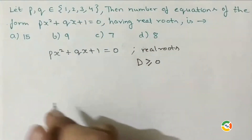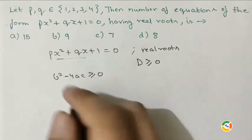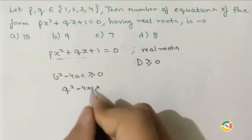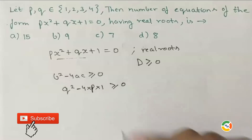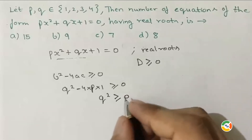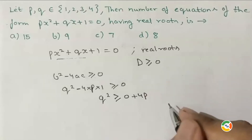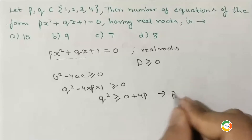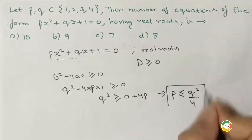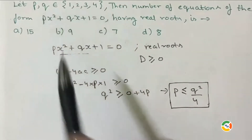The discriminant is b² - 4ac ≥ 0. For our equation, this gives q² - 4(1)(p)(1) ≥ 0, which simplifies to q² - 4p ≥ 0. Therefore, p ≤ q²/4. This is our primary condition, and we now substitute the values 1, 2, 3, 4 to check each case.